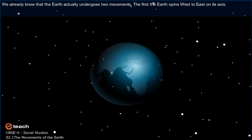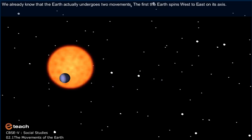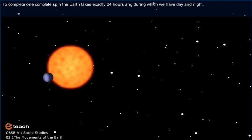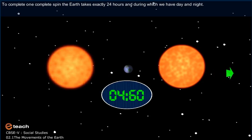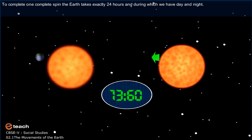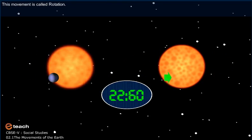We already know that the Earth actually undergoes two movements. The first: the Earth spins west to east on its axis. To complete one full spin, the Earth takes exactly 24 hours, during which we have day and night. This movement is called Rotation.